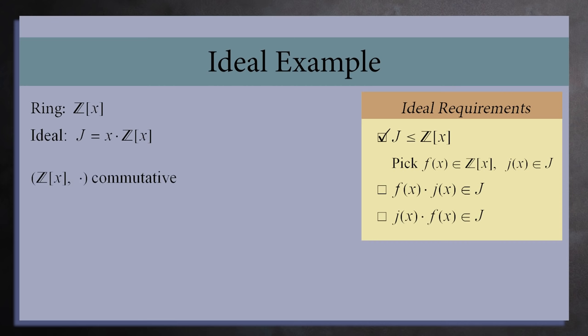Because the ring is commutative, these two are equal. So we'll just check that f(x) times j(x) is in j.